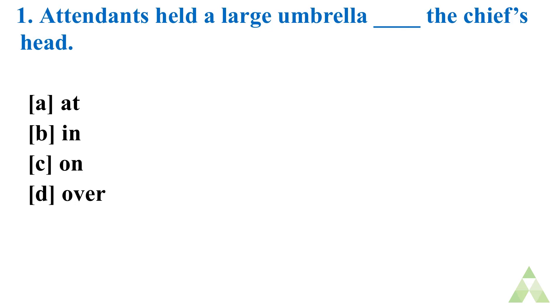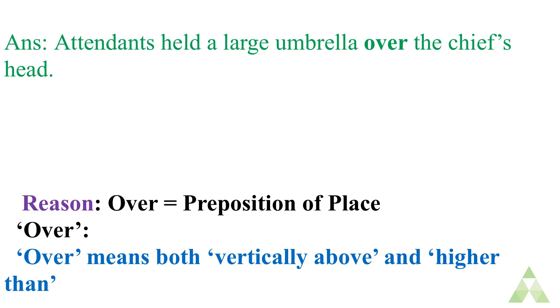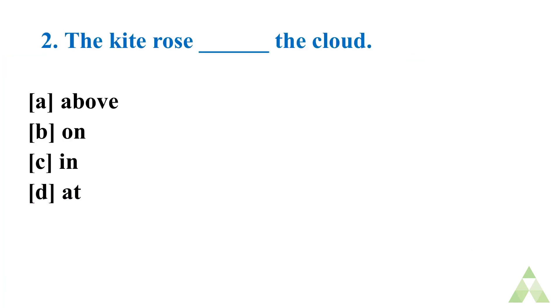And over is used for vertically over means higher than. So here is the use of umbrella. The use of umbrella defines that something is higher than. So what will be the answer? Simple. Very simple. Over means vertically over. You can see. Attendants held a large umbrella over the chief's head. And the reason is over is the preposition of place which means vertically above or higher than. It is higher than. So over is used.